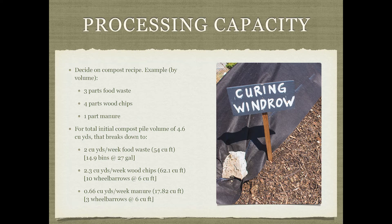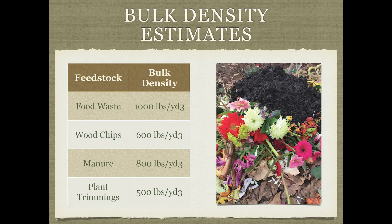Wood chips, which we work with in wheelbarrows of approximately 6 cubic feet, comes to about 10 wheelbarrows. Manure is also in wheelbarrows — about 3 wheelbarrows. This gives us an idea of how many wheelbarrows and bins we'll use in building our first pile. These are the bulk density estimates I use: food waste at about 1,000 pounds per cubic yard, wood chips at about 600 pounds per cubic yard, manure at about 800 pounds per cubic yard, and plant trimmings at about 500 pounds per cubic yard.